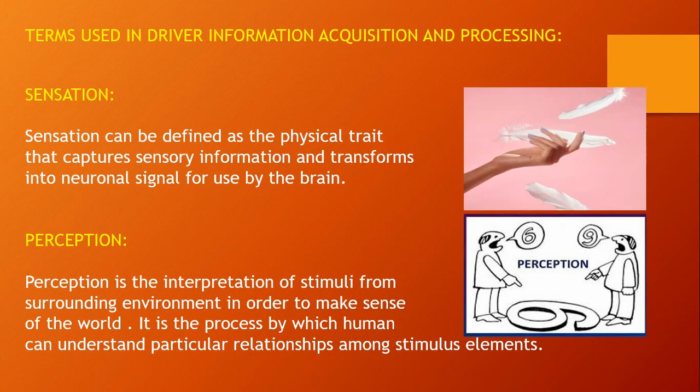First, what is sensation? Sensation can be defined as the physical phenomenon that captures sensory information and transforms it into neuron signals sent through the nerves to the brain. What is perception? Perception is the interpretation of stimuli from the surrounding environment in order to make sense of the world.